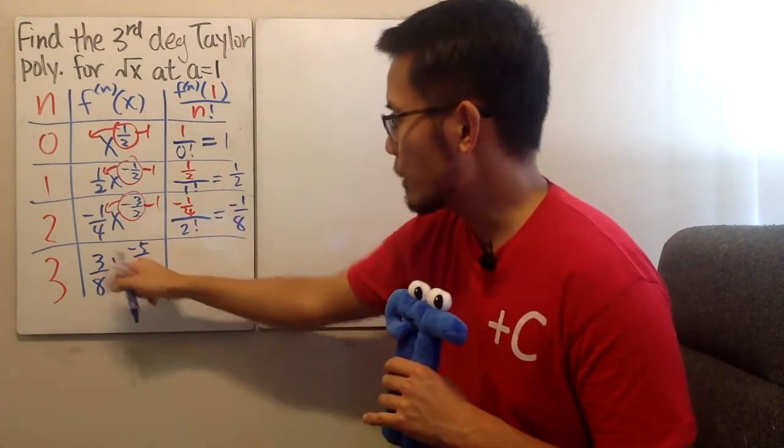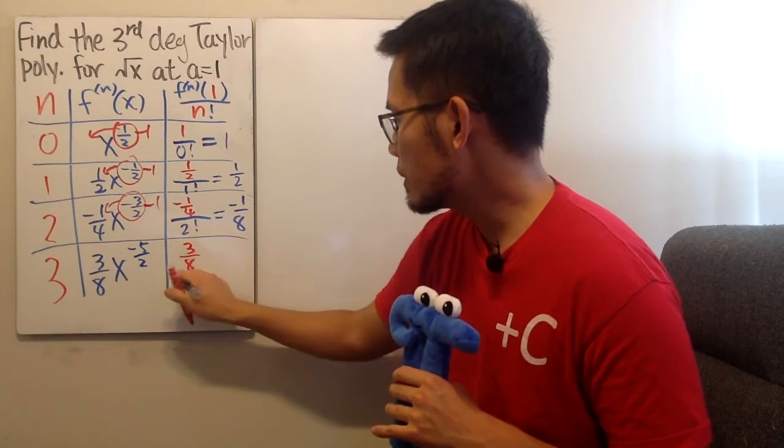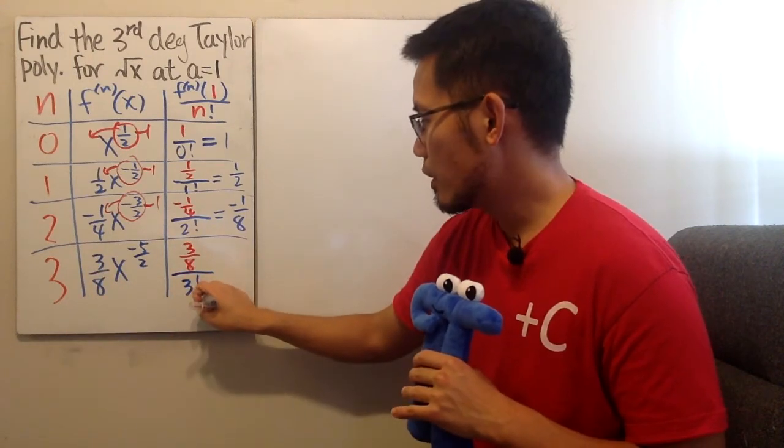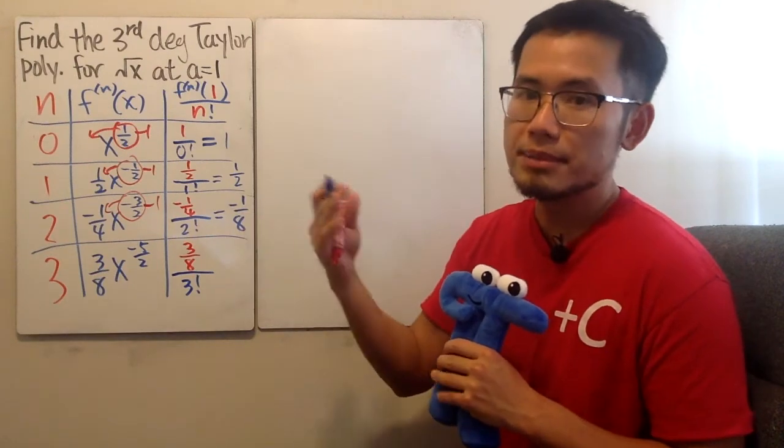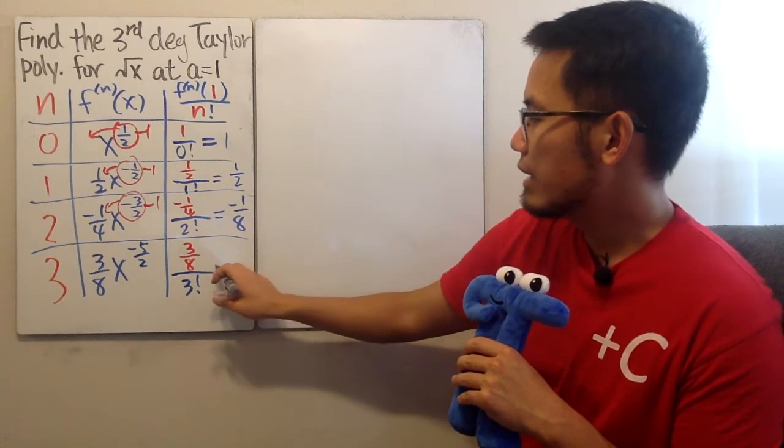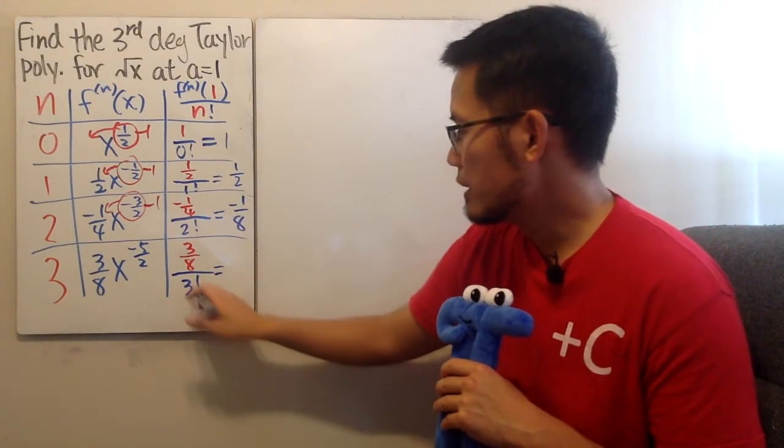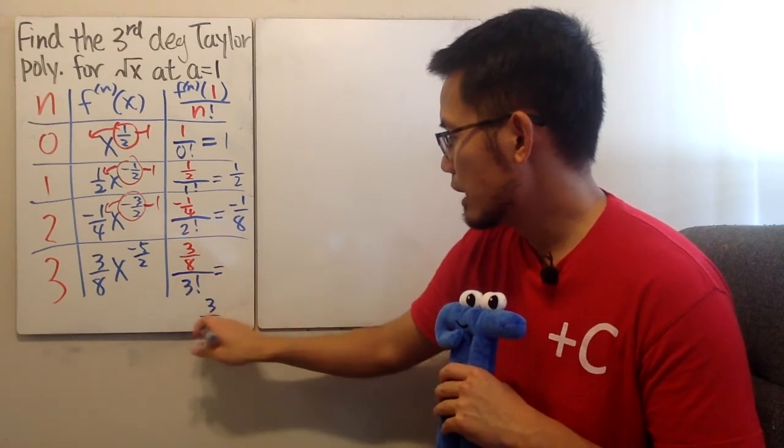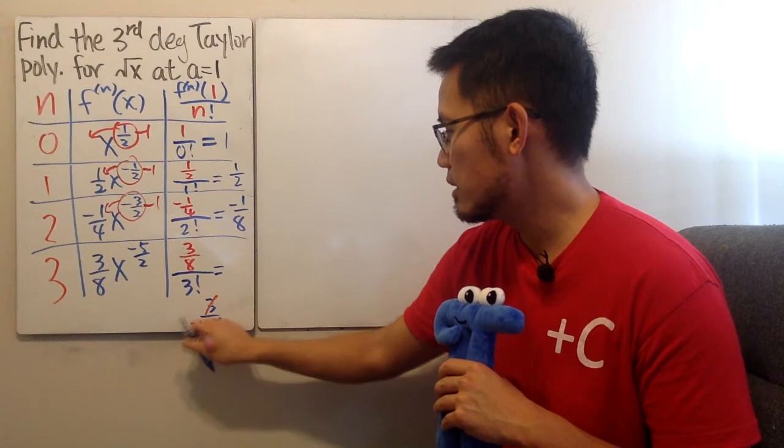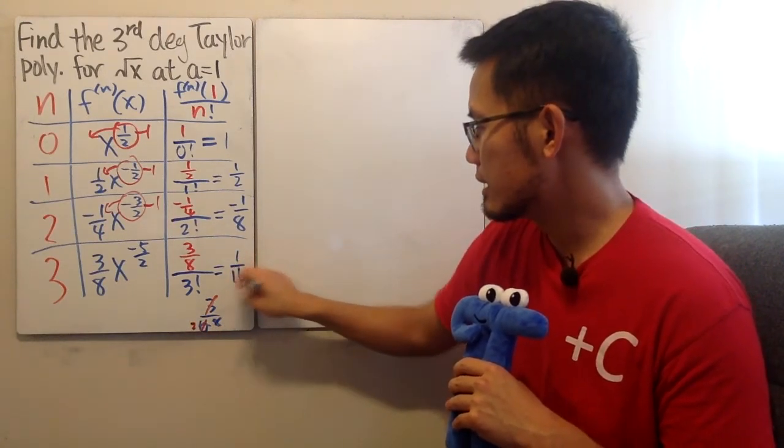Similarly, put the 1 in here, we actually have 3 over 8 on the top. Then we divide it by 3 factorial. What's 3 factorial? 3 times 2 times 1, which is 6. And that's the denominator multiplied with that. And you can just write it as 3 over, well, this is 6 times 8. And of course, we can just reduce. So this is going to be 1 over 16.